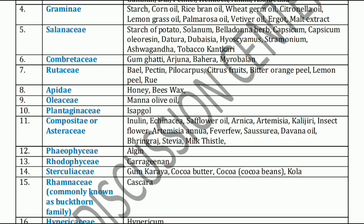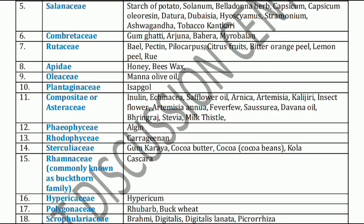Next, Apidae family. Apidae family mainly includes Honey and Beeswax. Next is Oleaceae family. Oleaceae family includes Manna and Olive oil. Next, Plantaginaceae family. Plantaginaceae family is notable mainly for Isabgol — Plantago ovata.